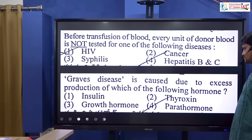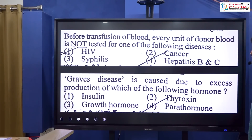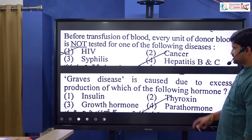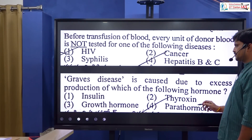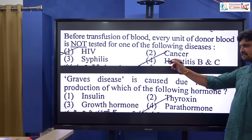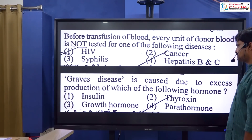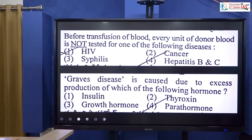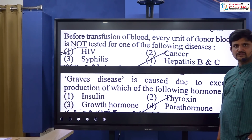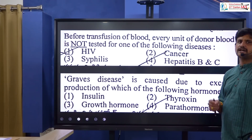Graves disease is caused due to excess production of which hormone? Options include insulin, growth hormone, somatotrophic hormone, thyroxin, and parathormone. The correct answer is thyroxin. Excess thyroxin leads to hyperthyroidism, which causes Graves disease, while reduced thyroxin leads to hypothyroidism.